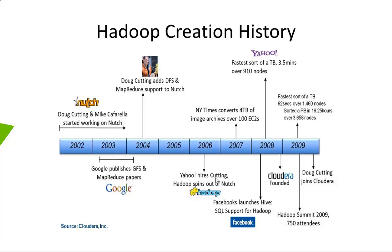When it was given to Apache, Doug Cutting was asked to name the package because it didn't have a name. Hadoop was the name given by Doug Cutting — it was the name of the toy elephant that his son was playing with. When he was sitting on the couch thinking of a name, he struck upon the idea that Hadoop should be like a toy which can be played with by a programmer, but at the same time like a big elephant which can tackle bigger problems — and that's exactly what Hadoop does today.